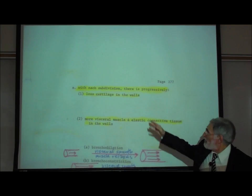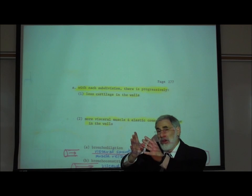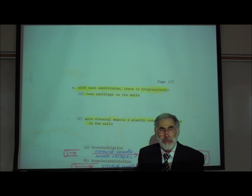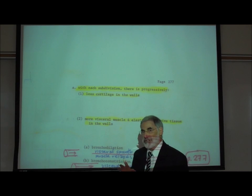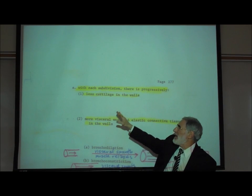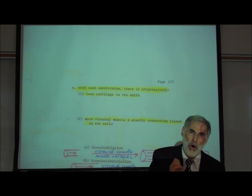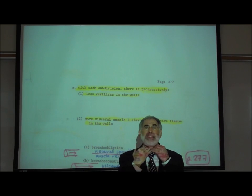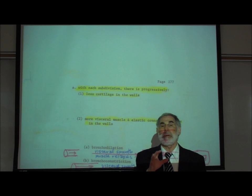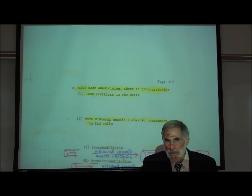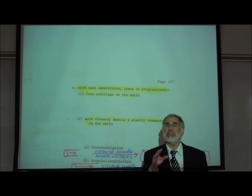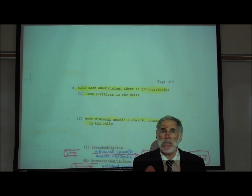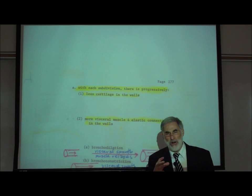On page 277, with each subdivision of the airways into smaller and smaller tubes, three histological changes occur in the walls. First, the smaller the airway, the less cartilage found in the wall. The trachea, a large airway, has a lot of cartilage to prevent it from collapsing. Tiny bronchioles have very little cartilage and are therefore prone to collapse, as they are not reinforced with hyaline cartilage.